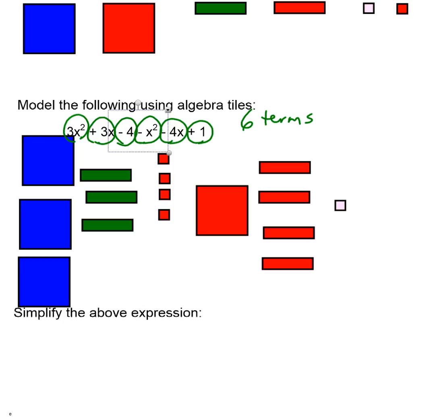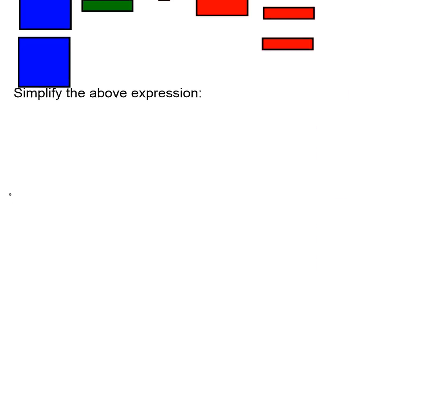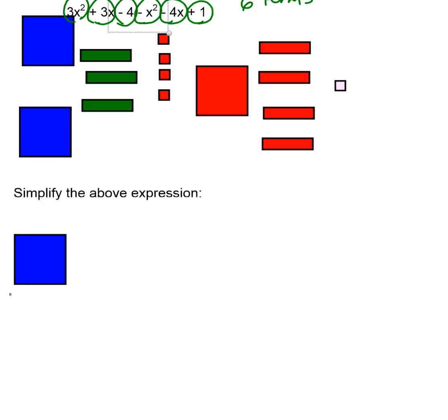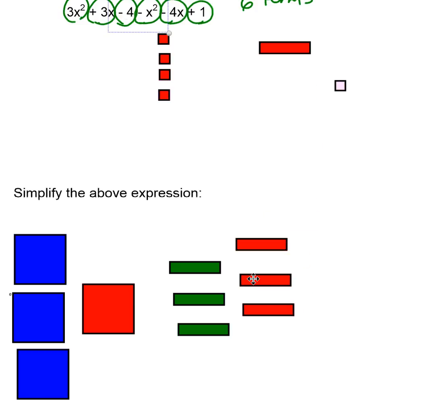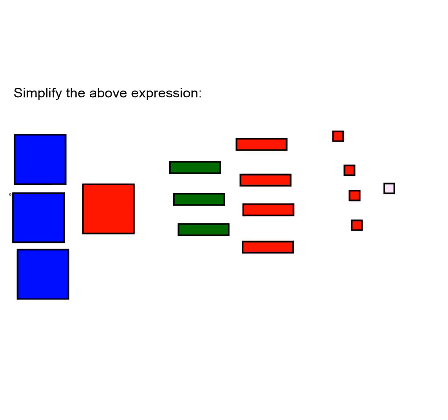For example, what I can do is I can take my x squareds and I can have my 3 x squareds and I can put them with my 1 negative x squared. Then I can take my 3 x's and I can put them with my 4 negative x's. And I can take my 4 negative 1's and I can put it with my 1. So what I've done is I haven't actually changed the expression. I've just changed the order. So now I have 3x squared take away 1x squared plus 3 x's take away 4 x's minus 4 ones adding 1 one.